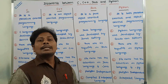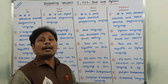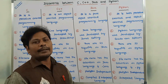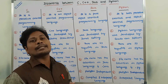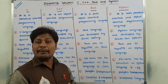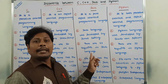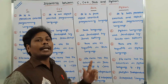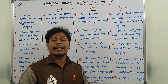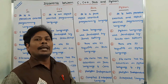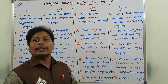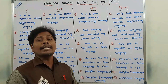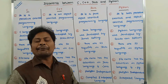Next point: in C language there are 32 keywords, whereas in C++ language there are 50 keywords. In Java language there are 63 keywords, and in Python language there are 33 keywords. A keyword is a reserved word that is used for performing a specific function.